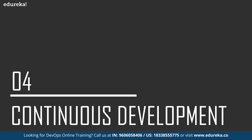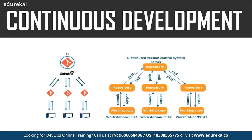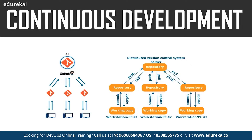The first phase of the DevOps lifecycle is continuous development. This phase involves planning and coding of the software application's functionality. There are no tools for planning as such, but there are many tools for maintaining the code. The vision of the project is decided during planning, and then actual coding begins. The code can be written in any language but is maintained using version control tools. The most popular tools used are Git, SVN, Mercurial, CVS, and Jira. Tools such as Ant, Maven, and Gradle can be used for building or packaging the code into an executable file to be forwarded to the next phases. Tools like Git enable communication between the development and operations teams, which was one of the drawbacks of the agile model.